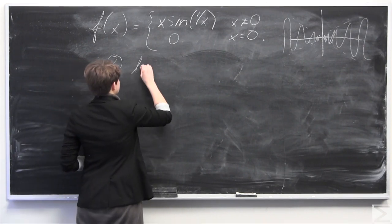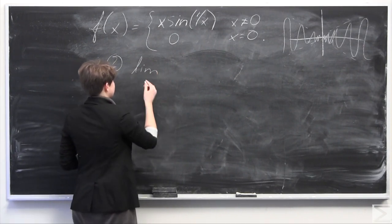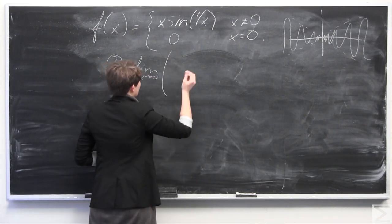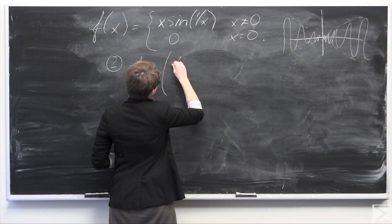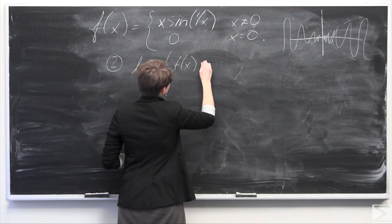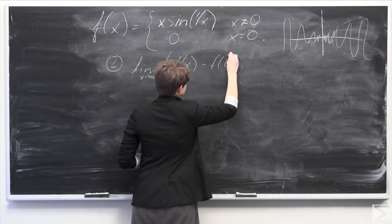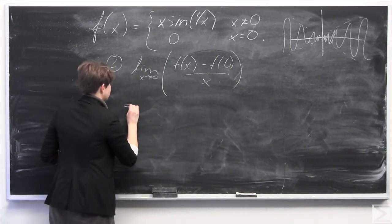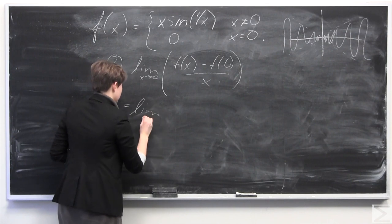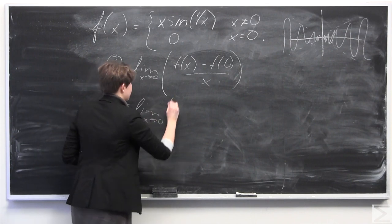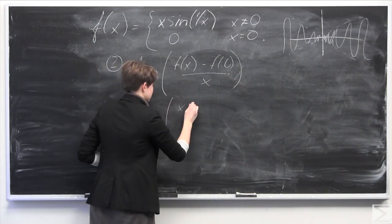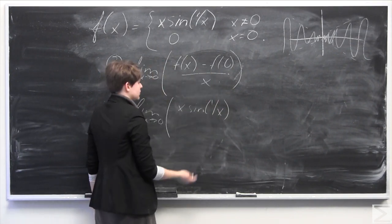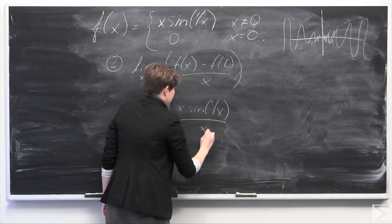So I'm going to take the limit, using the definition of the derivative, I'm going to take the limit as x approaches 0 of f of x minus f of 0, all divided by x. Which in this case equals the limit as x approaches 0, f of x, which is x times sine of 1 over x, minus f of 0, which is just 0, all divided by x.